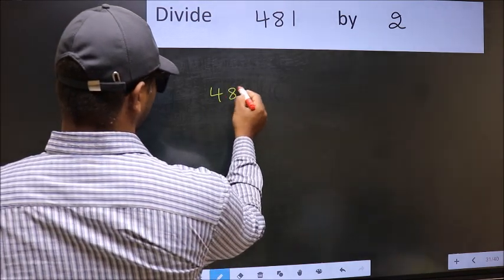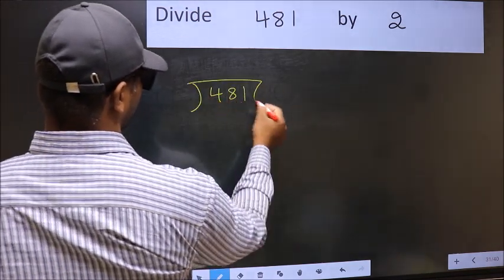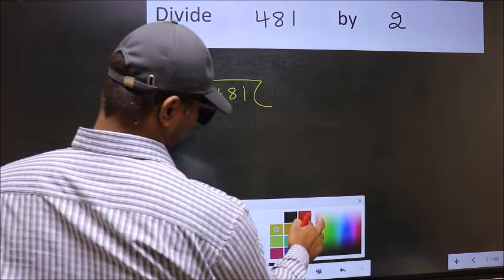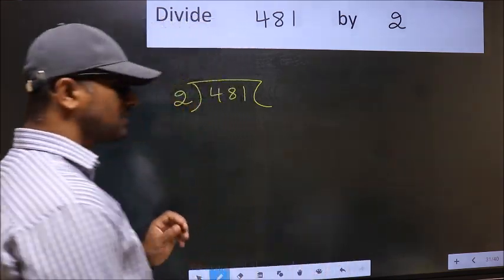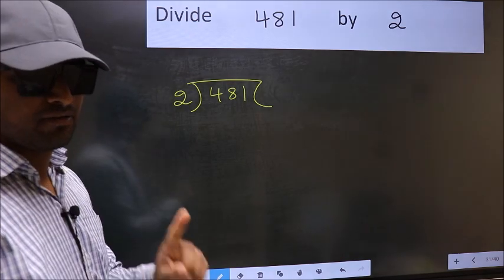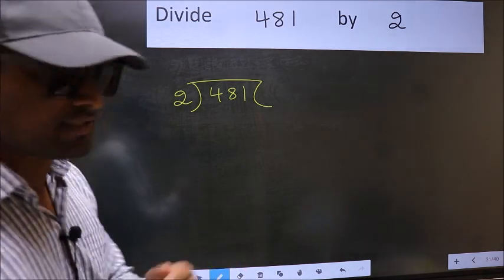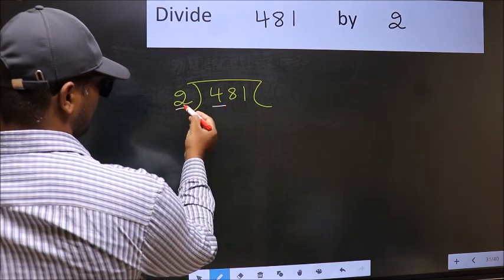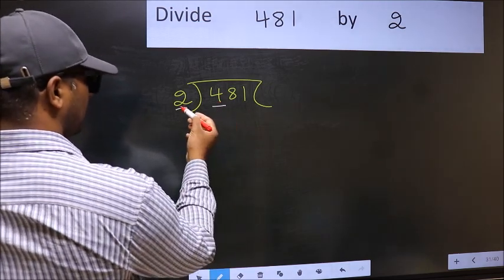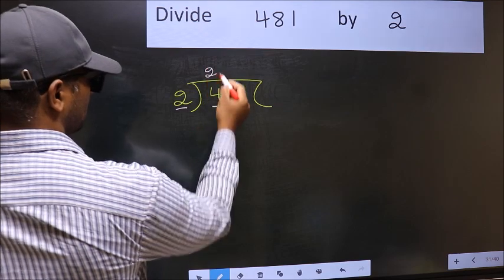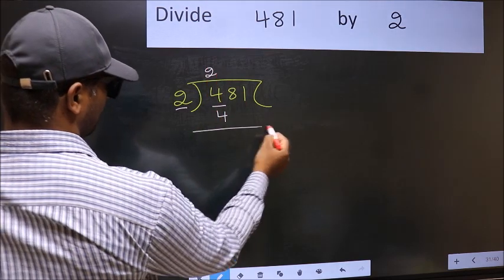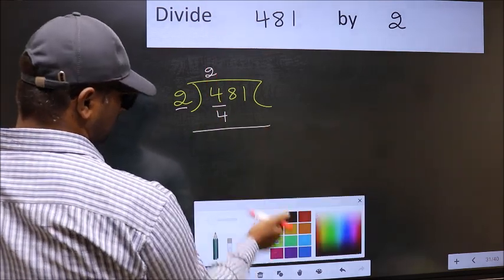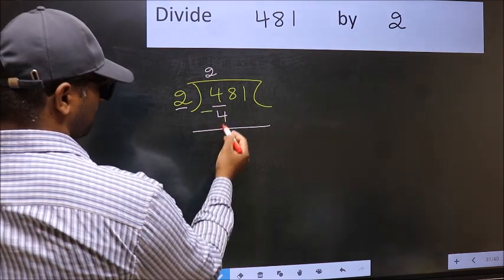481, 2 here. This is your step 1. Next, here we have 4 and here 2. When do we get 4 in the 2 table? 2 times 2 is 4. Now you should subtract: 4 minus 4 equals 0.